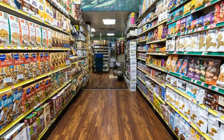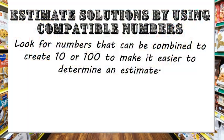Another way we can estimate solutions is by using compatible numbers. Compatible numbers is a useful strategy when adding more than two addends, or typically a long list of numbers. With this strategy, you look for two or three numbers that can be combined to create 10 or 100 to make it easier to determine an estimate.